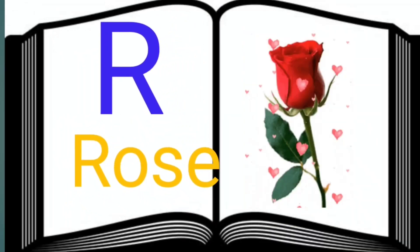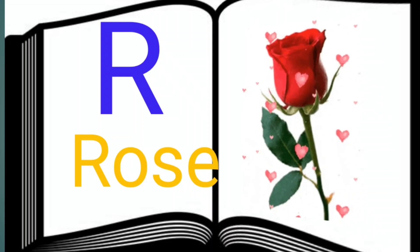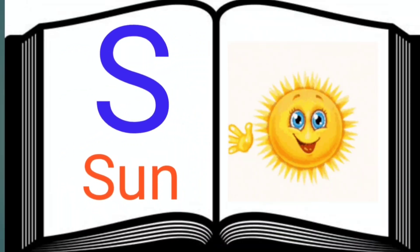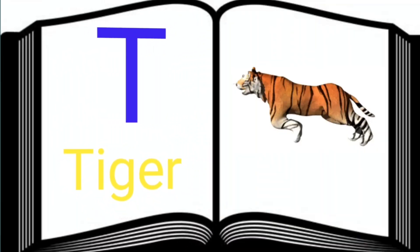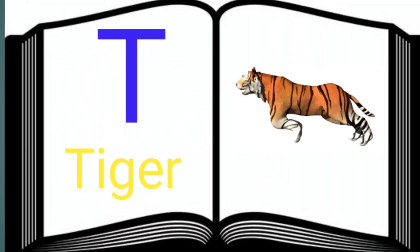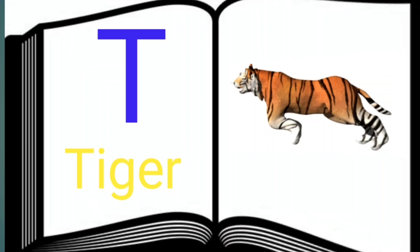R. R for rabbit. S. S for sun. T. T for tiger.